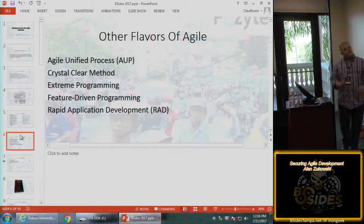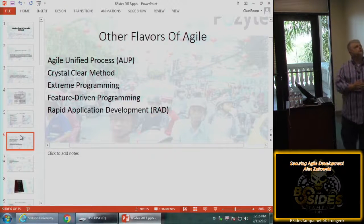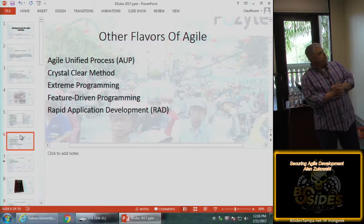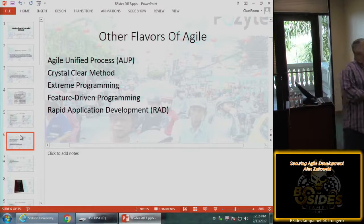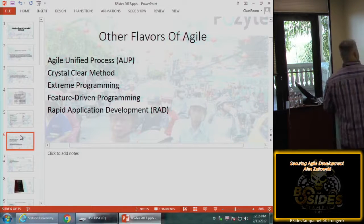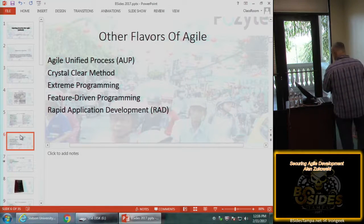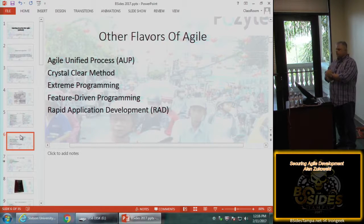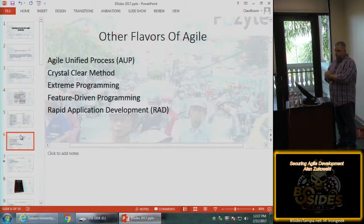Other flavors of Agile include: Agile Unified Process, Crystal Clear Method, Extreme Programming, Feature-Driven Development, and Rapid Application Development — which has been around longer than Scrum. Some of these go back to government use. I've heard people use NASA as an example: the space program was basically Agile because the president said 'we're going to the moon' — that was the user story.